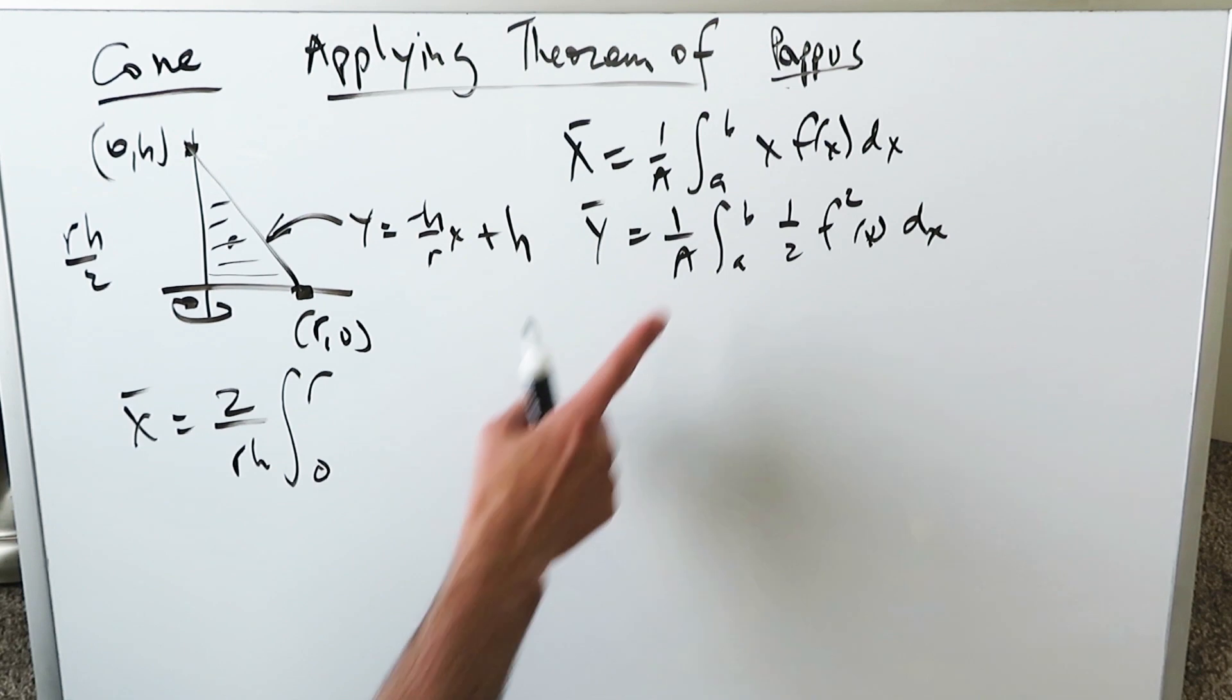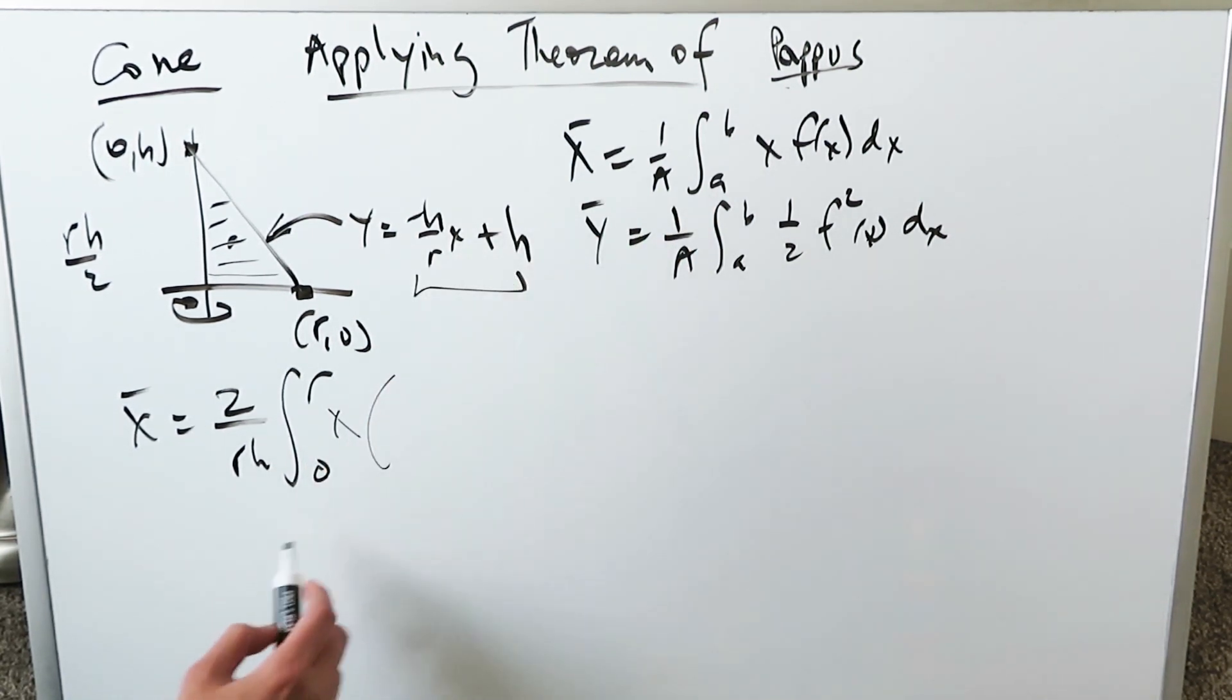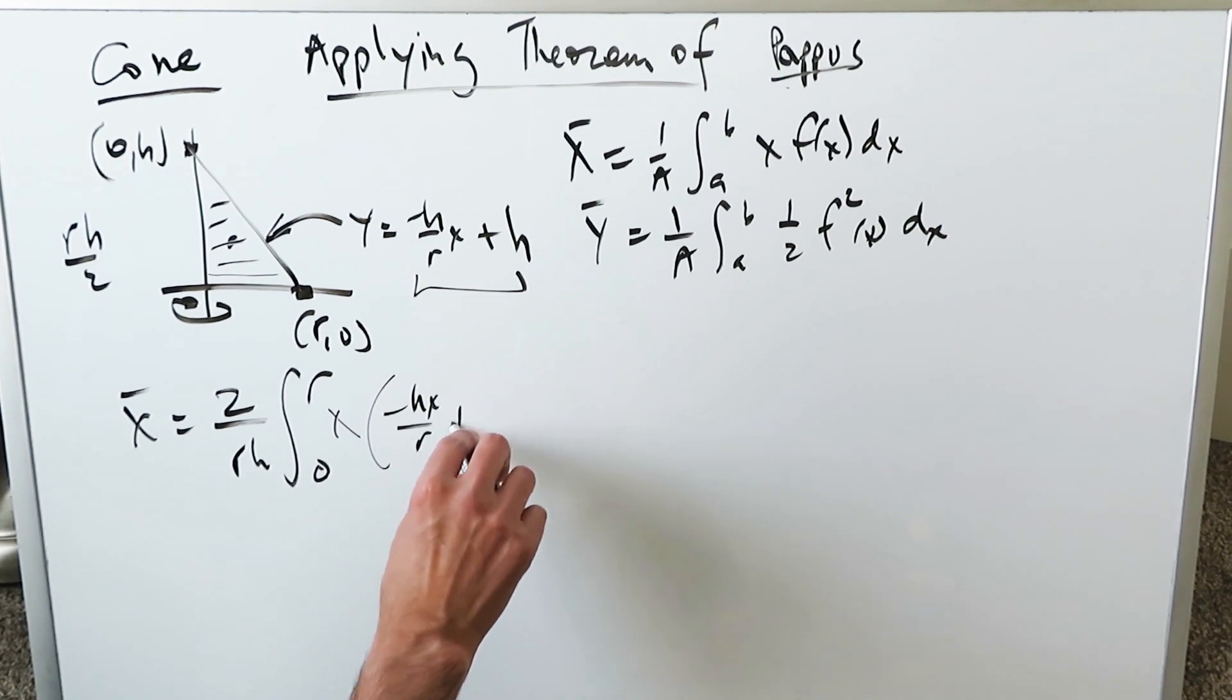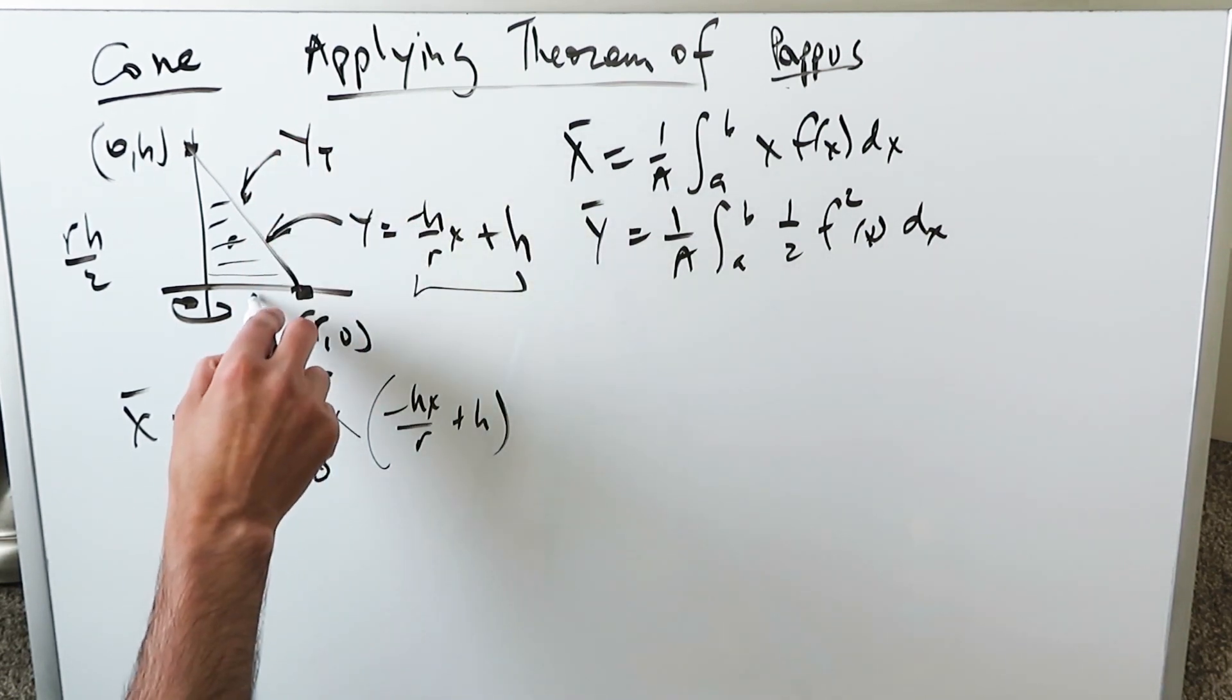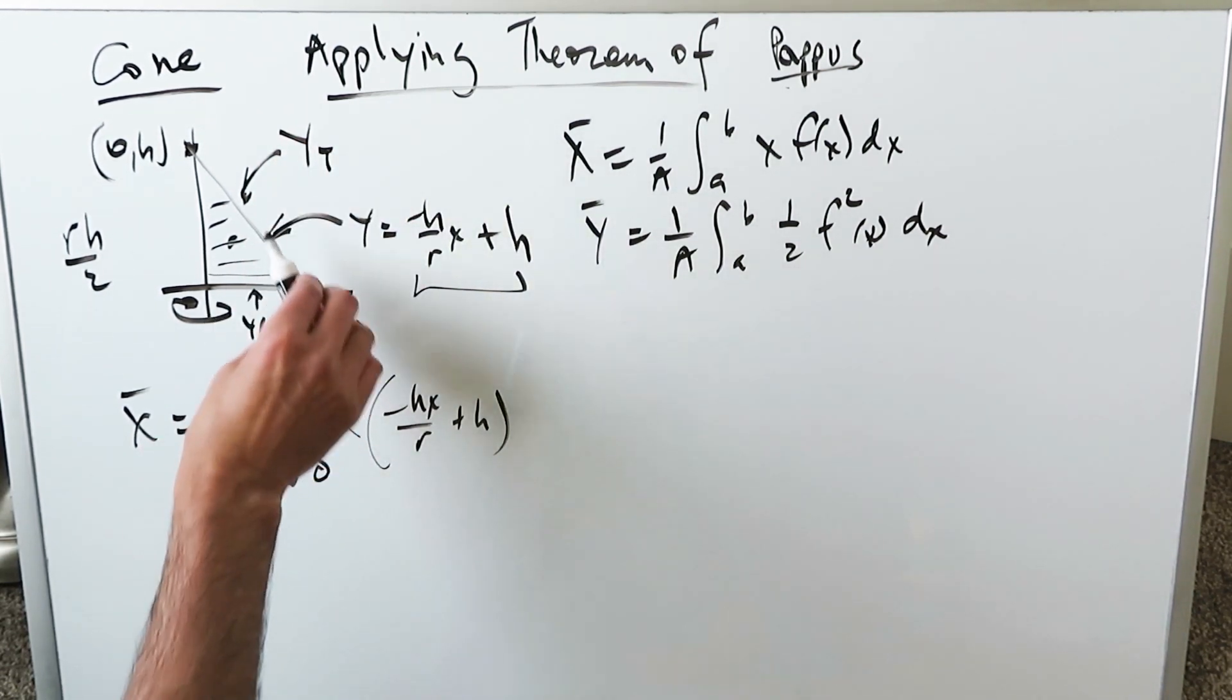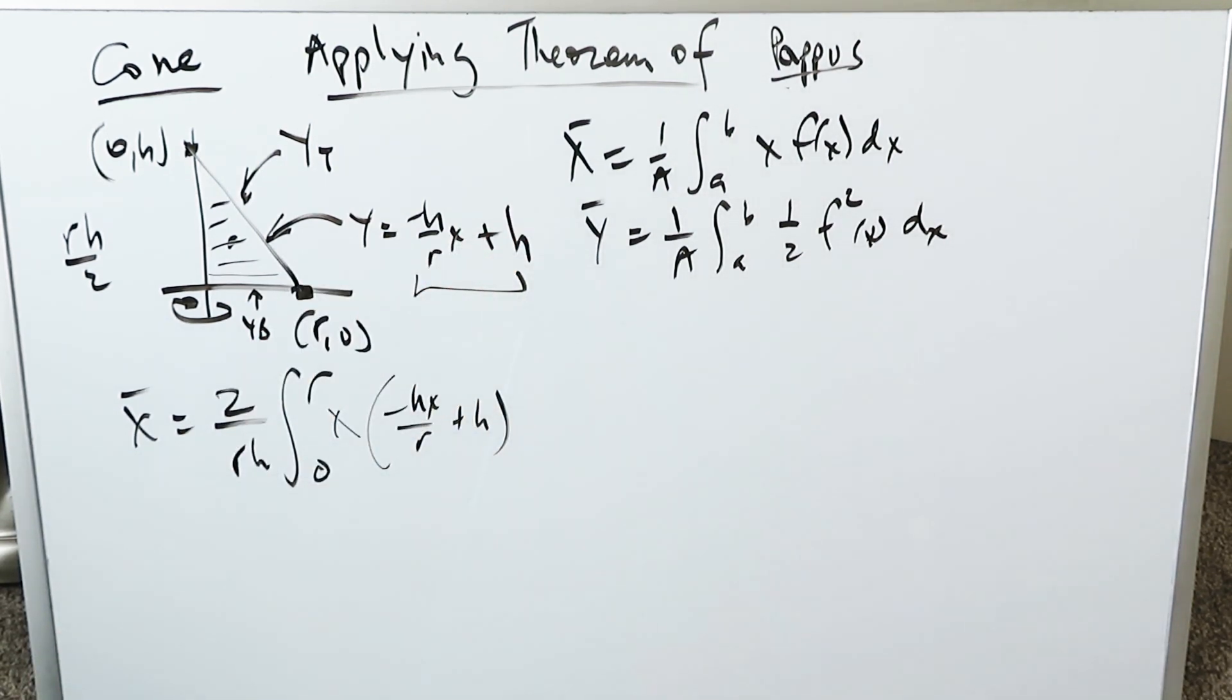Looking from 0 to r, x times this, your function right here: minus hx over r plus h. Why is this the function? Because when you're looking at this, this represents here my top boundary curve. This will be the lower boundary curve. The top boundary curve is your function which has this equation for that line.